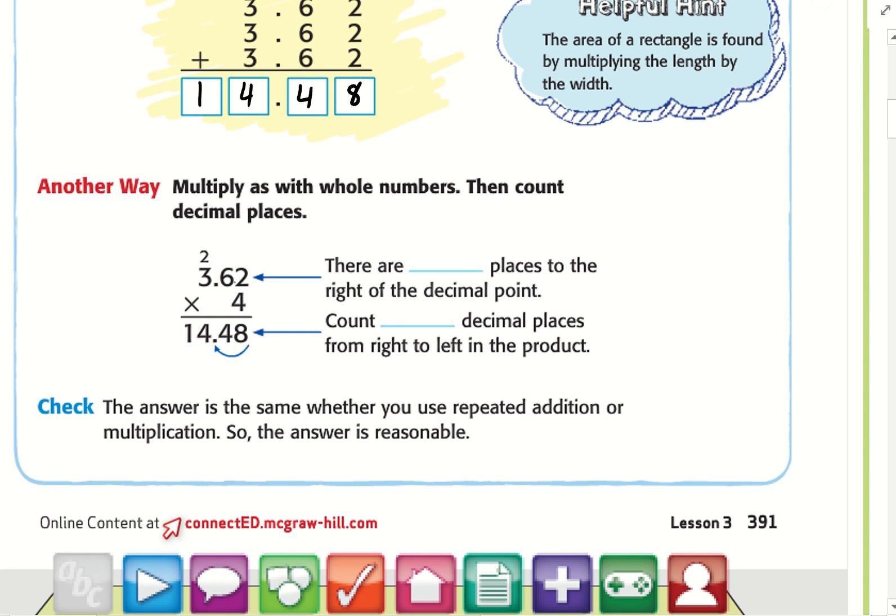2 times 4 equals 8. 4 times 6 equals 24. 4 times 3 equals 12, plus 2 is 14. If you notice, there are two places to the right of the decimal.